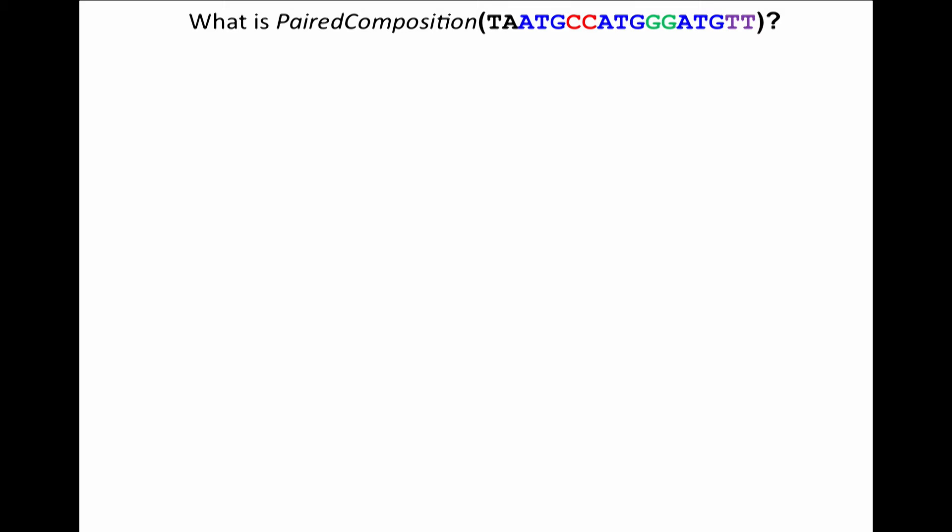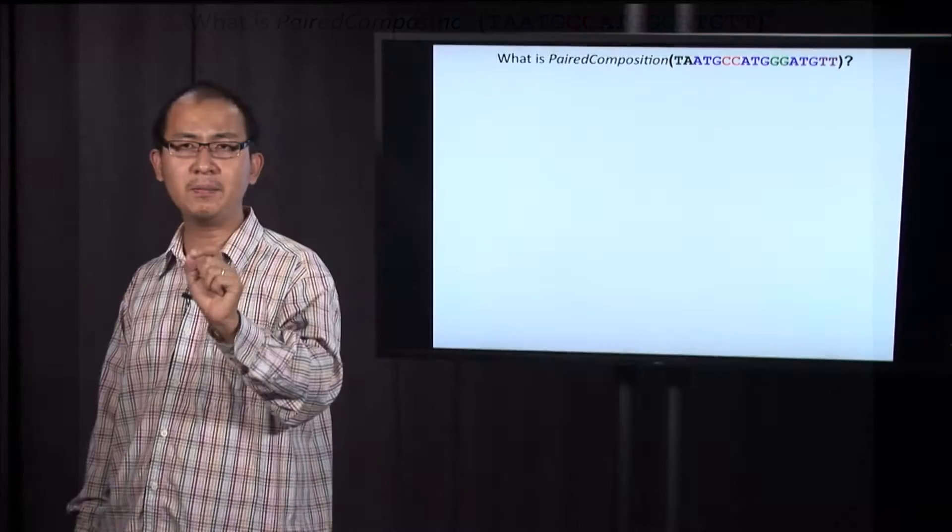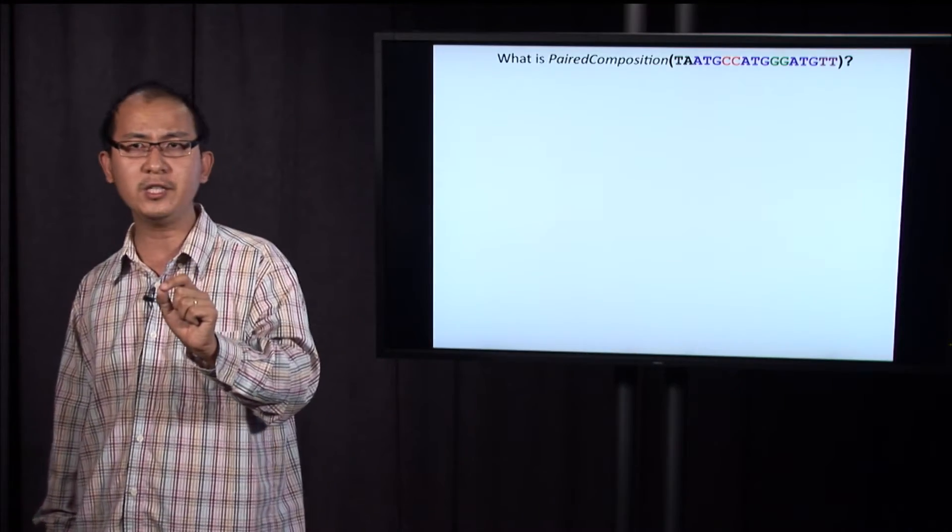So the question is how to construct the genome, not from the k-mer composition like previously described, but from paired k-mer composition. But what is paired k-mer composition?